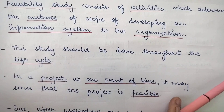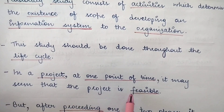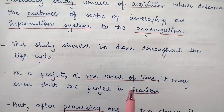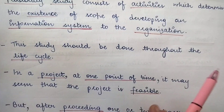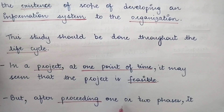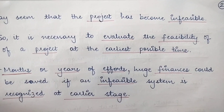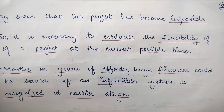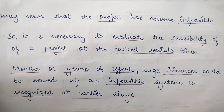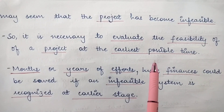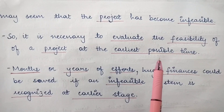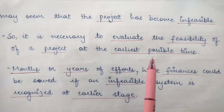In a project, at one point of time it may seem that the project is feasible — during the initial stages or during the midst of system development one may find it feasible. But after one or two phases, it may seem that the project is infeasible. For that reason, feasibility study should be done at each and every phase of the system development life cycle, not just at the initial stages.